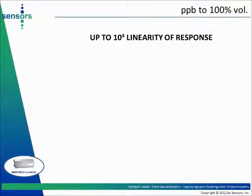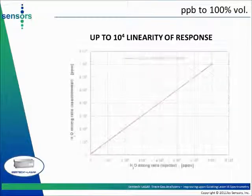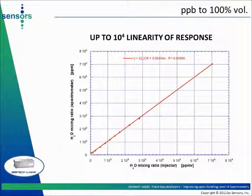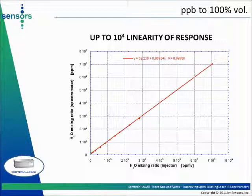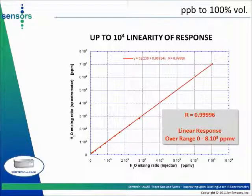The Semteklas R offers wide dynamic range response. In this experiment, the analyzer was calibrated for the measurement of water vapor from one parts per million to one percent volume. Validation results were obtained over the one to eight thousand parts per million range. Linearity of instrumental response over that range was characterized by a determination coefficient R of 0.99996.